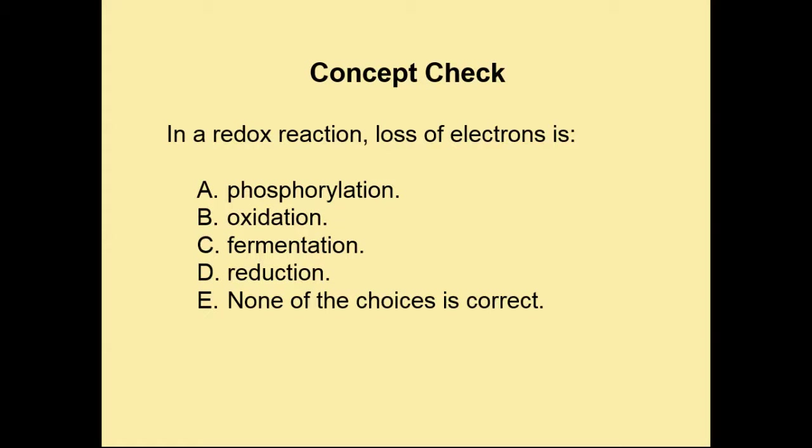The correct answer is oxidation. The loss of electrons is oxidation. Remember the mnemonic OIL RIG — Oxidation Is Loss, Reduction Is Gain. So if we lose electrons, it is oxidation. If you have any questions, you can post them in the discussion board or shoot me an email. Happy studies!